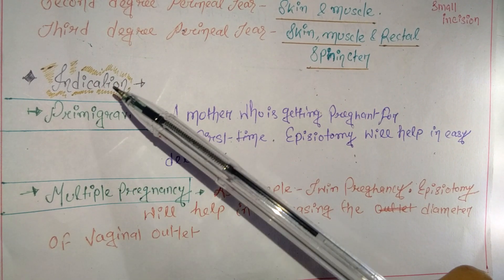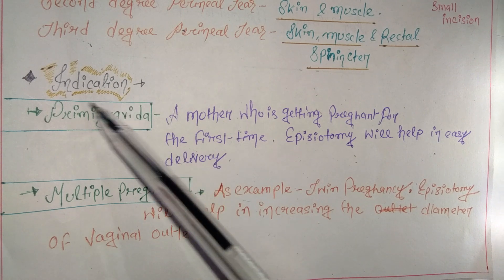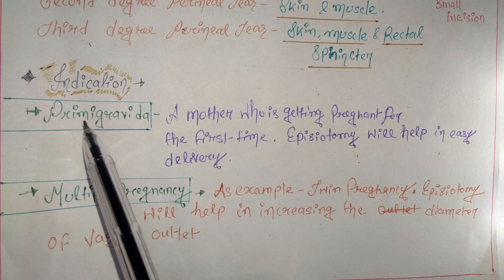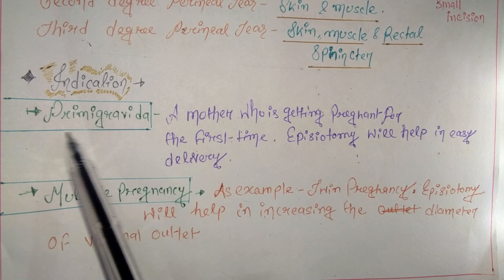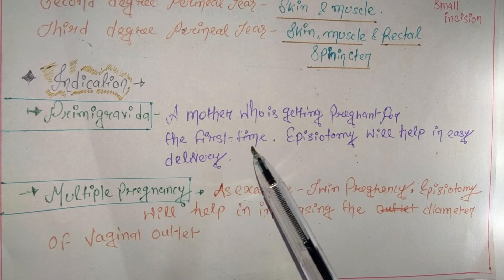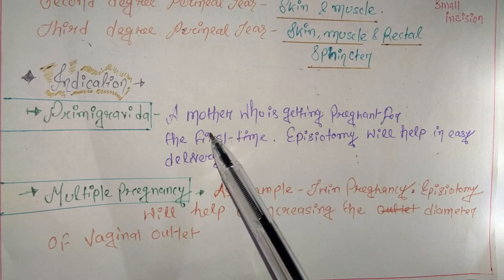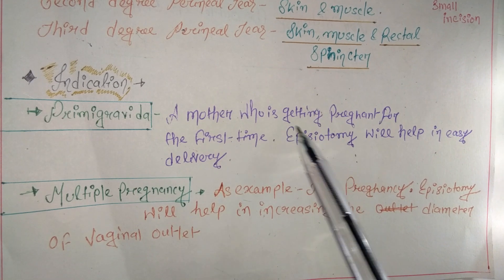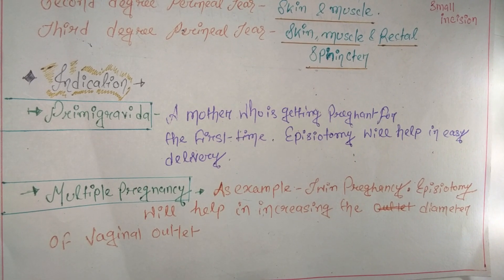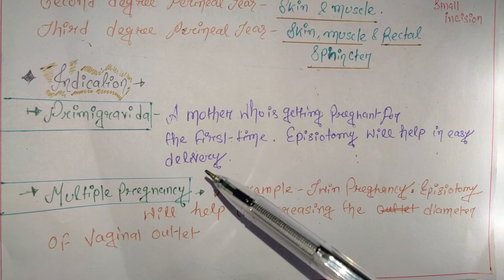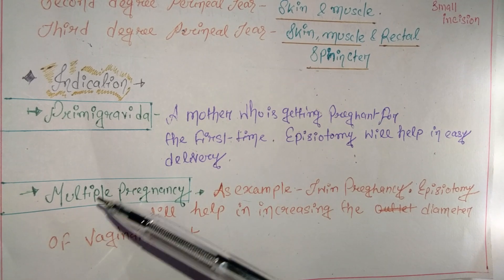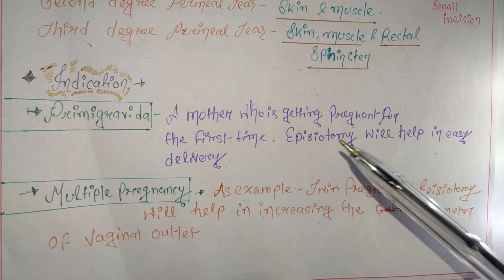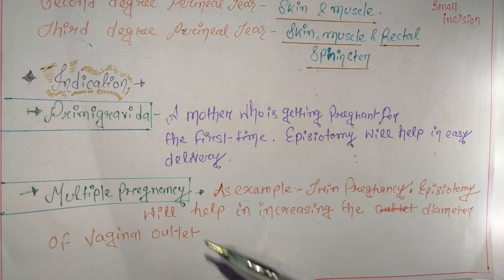Now let's look at the indications — the conditions in which we perform episiotomy. First: primigravida, meaning a mother who is pregnant for the first time. There is a high risk in primigravida during normal delivery, so episiotomy helps in easy delivery by widening the area.